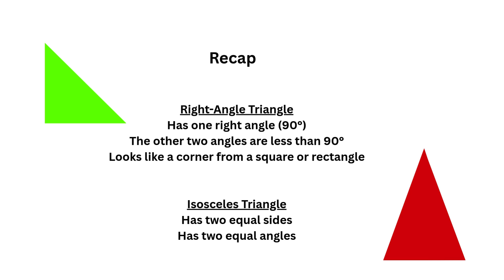Just a recap before we end. A right angled triangle has one right angle of 90 degrees; the other two angles are always less than 90 degrees. You can see on our green triangle here, the bottom left angle is a 90 degree angle and it looks like the corner from a square or a rectangle. An isosceles triangle has two equal sides and two equal angles, and it will always be an isosceles triangle if it has two equal angles.